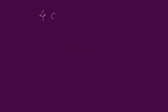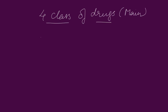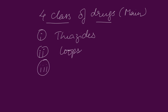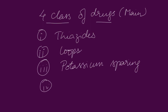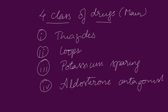We are going to discuss mainly about four classes of drugs. First, the thiazides. Second, the loop or high ceiling diuretics. Third, potassium-sparing diuretics. Fourth, aldosterone antagonists.